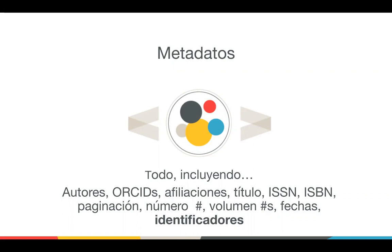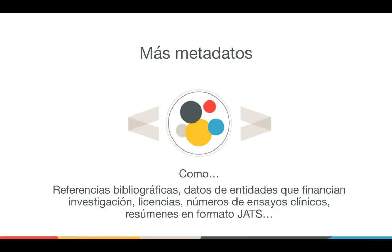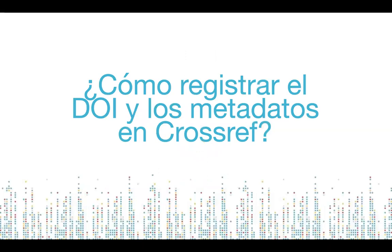Además, es importante que los metadatos sean precisos. Metadatos precisos hacen que su contenido sea más visible. Los metadatos son información sobre publicaciones que ponemos a disposición de miles de terceros para ayudar en las herramientas y servicios que brindan. Hay muchos tipos adicionales de metadatos que pueden incluirse: referencias, licencias, datos de entidades que financian la investigación, números de ensayos clínicos, relaciones, identificadores de ORCID. Todos estos metadatos ayudan a aumentar la visibilidad de sus publicaciones.